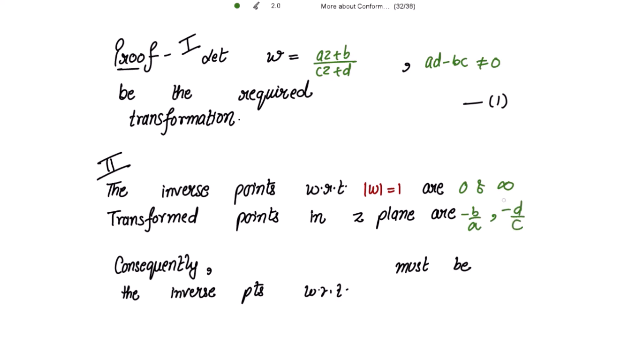Now, as 0 and ∞ are the inverse points with respect to the unit circle |w| = 1, consequently -b/a and -d/c must be the inverse points with respect to the circle |z - z₀| = r. These are the corresponding points for 0 and ∞.